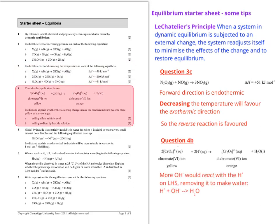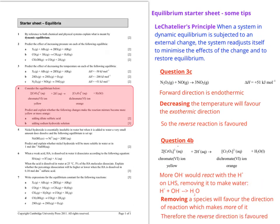For question 4b, if I add OH minus that would react with the H plus on the left hand side removing it to make water. If you remove a species the direction that makes more of it will be favored. We want the direction that makes more H plus. If the reverse direction is favored it makes more of the yellow chromate 6 ion.